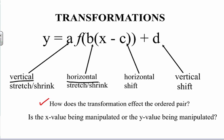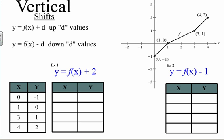Once you identify what the transformation affects in your ordered pair, and since a transformation shifts or moves points, it's important to know whether it is affecting the x value or the y value. First, we're going to talk about what's known as a vertical shift. This is a rigid transformation — it doesn't change the values of the points, it just moves the function up or down.